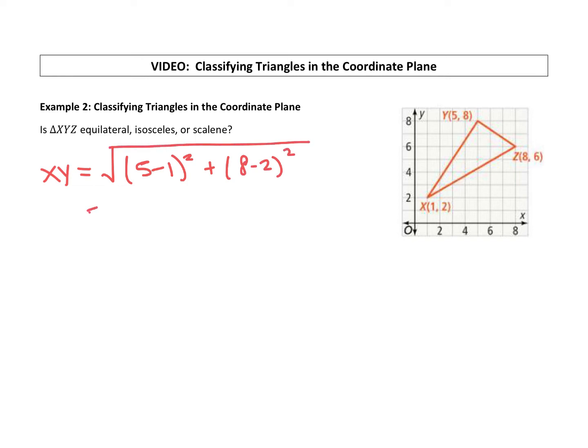When we simplify this, we are going to do our parentheses first. 5 minus 1 is 4, 8 minus 2 is 6, squared. Now we can go ahead and square those: 16 plus 36. And we get the square root of 52. So XY is square root of 52. That's how long that side of the triangle is.